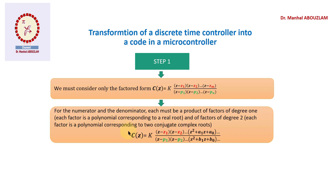Here is the second point in this step: if we have a real root we consider a polynomial of degree one, but if we have two complex conjugate roots we consider a polynomial of degree two. We can have several polynomials of degree two depending on how many complex conjugate root pairs we have.